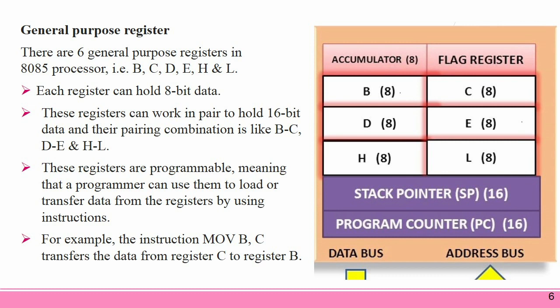The 8085 has 6 General Purpose Registers to store 8-bit data during program execution. These registers are identified as B, C, D, E, H, and L. They can be combined as register pairs BC, DE, and HL to perform some 16-bit operations. These registers are programmable, meaning a programmer can use them to load or transfer data using instructions. For example, the instruction MOV B, C transfers the data from register C to register B.